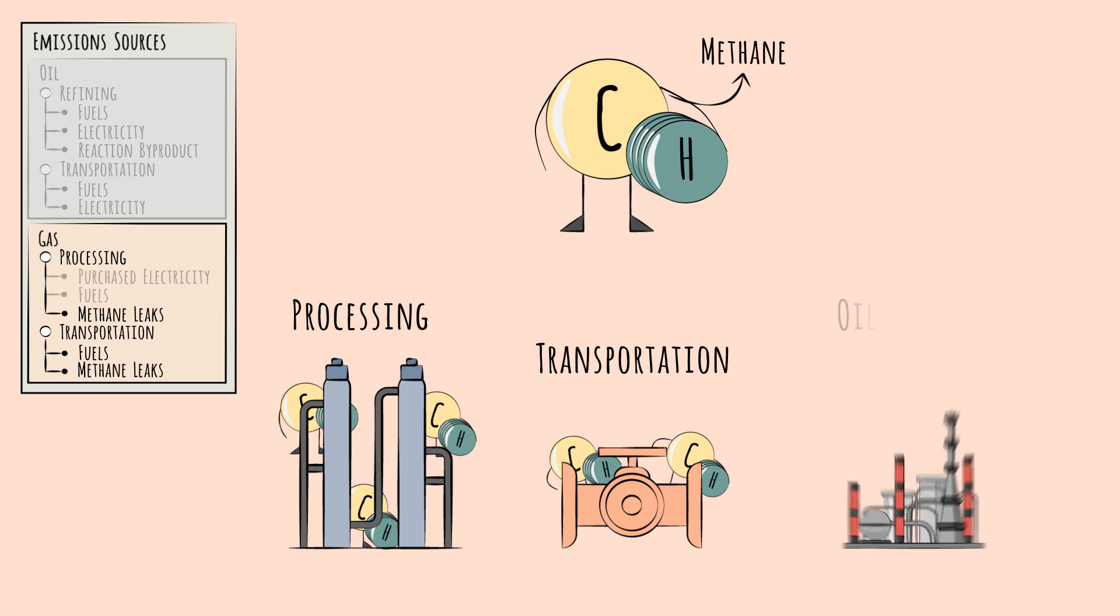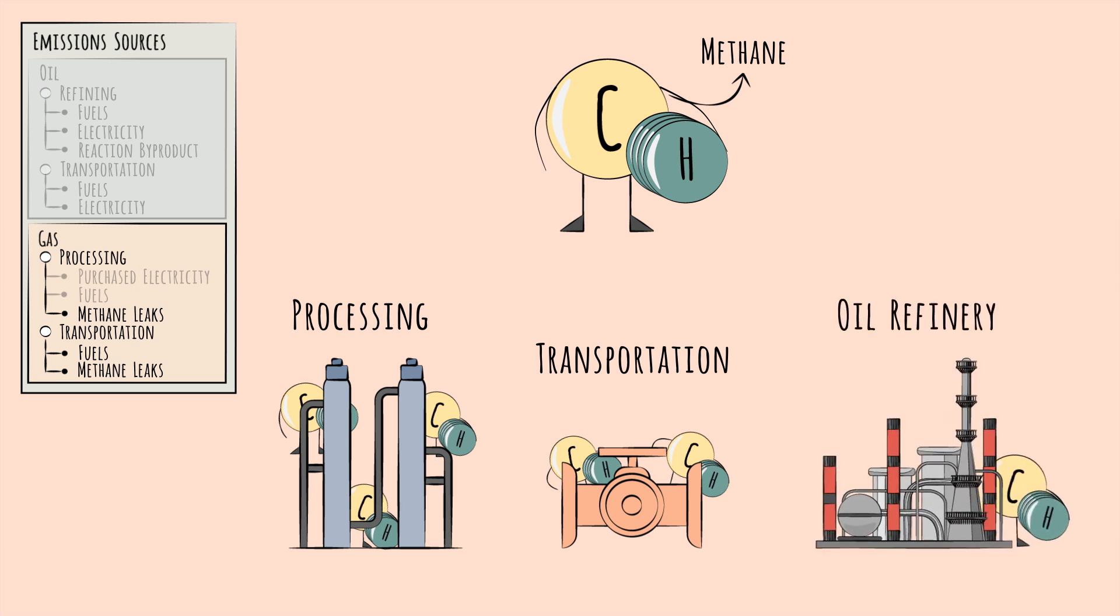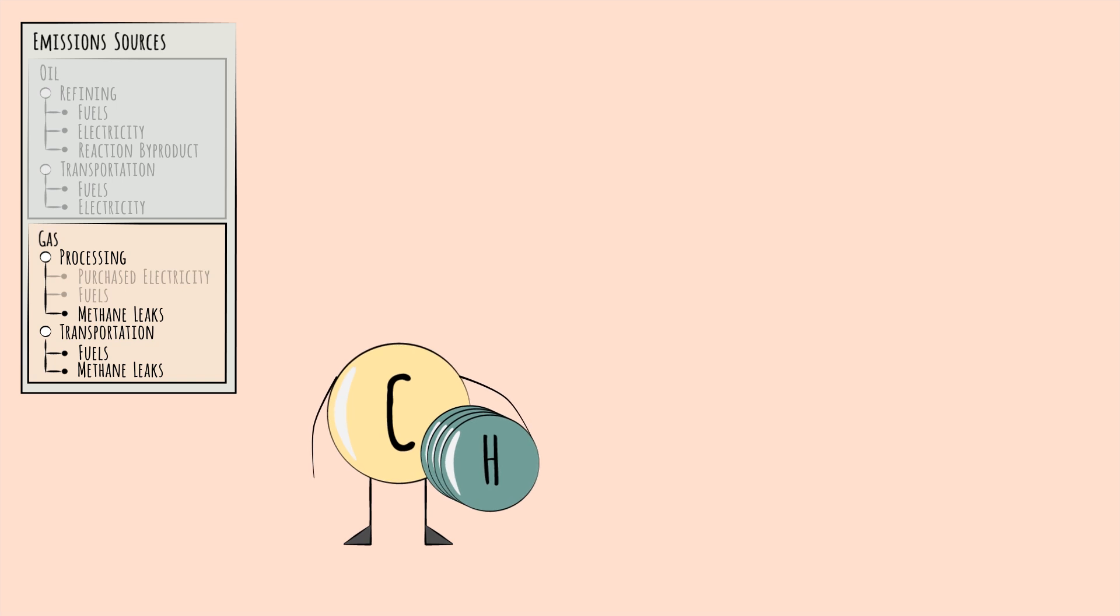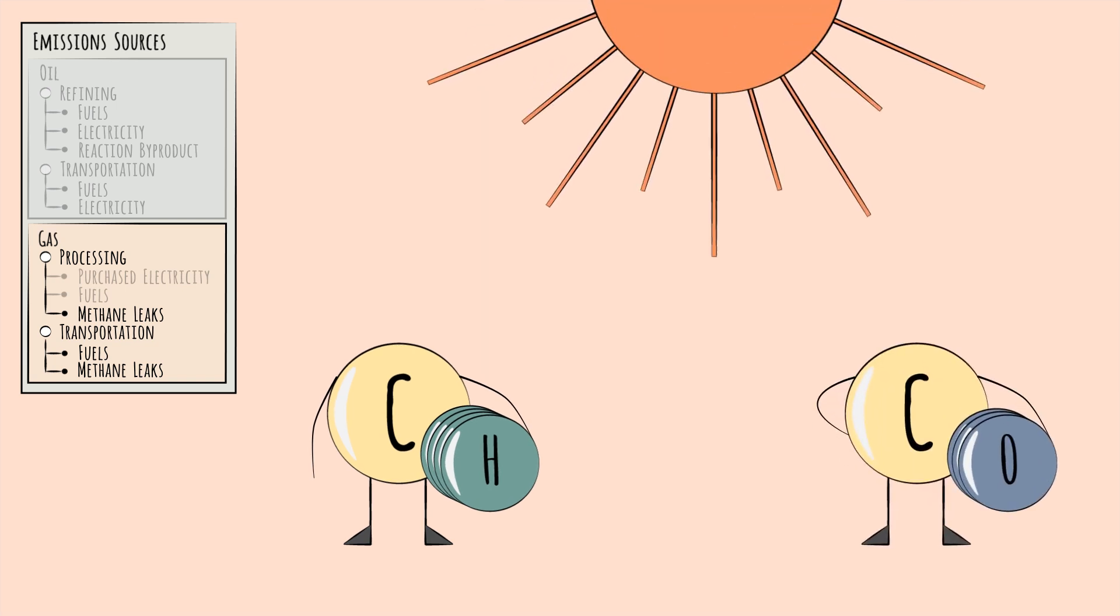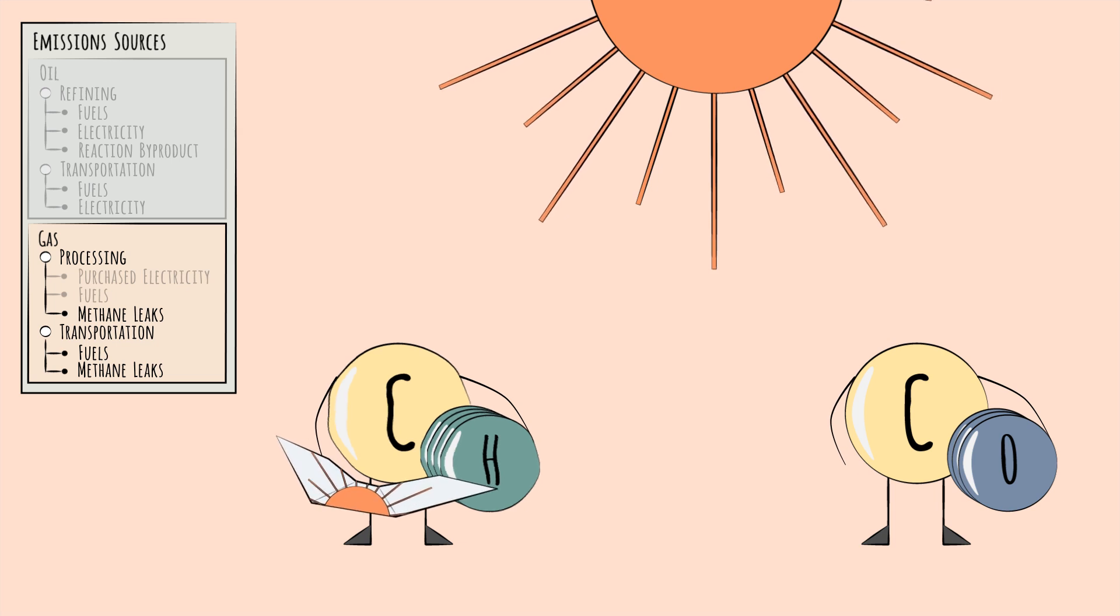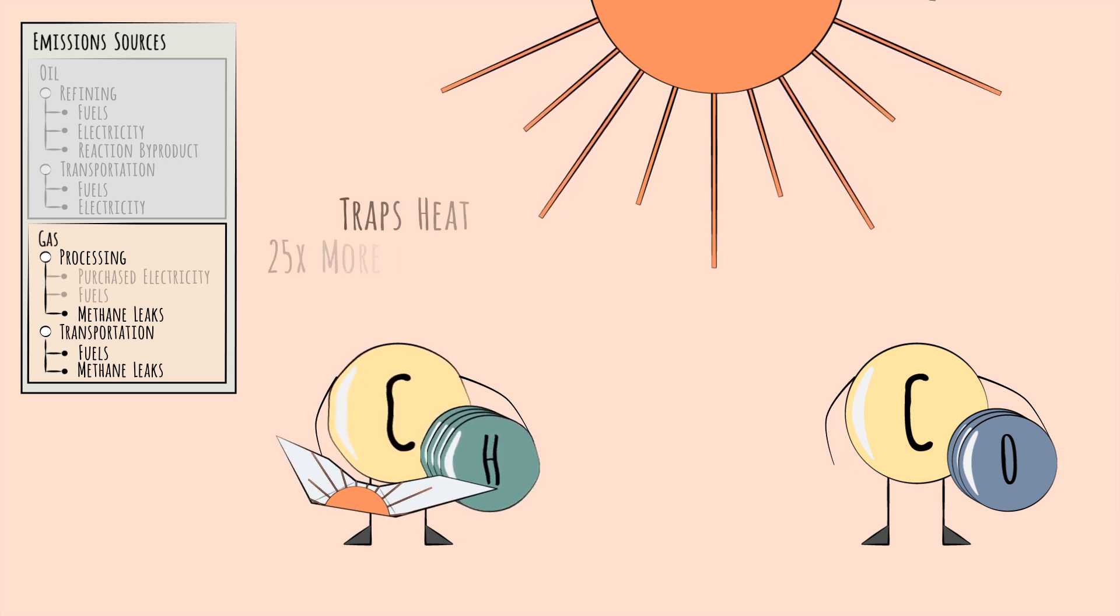On a volume basis, methane is emitted far less than CO2. However, methane is a much more potent greenhouse gas. A molecule of methane in the atmosphere traps heat over 25 times more effectively than a molecule of CO2.